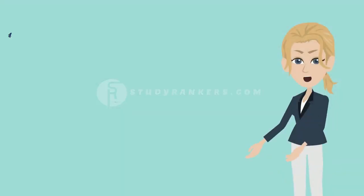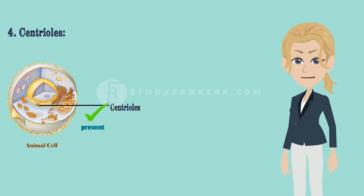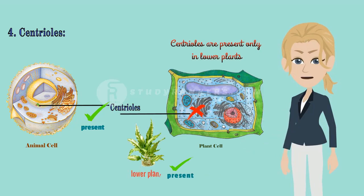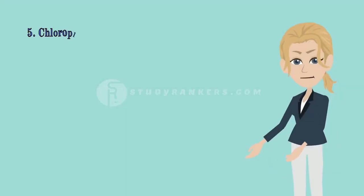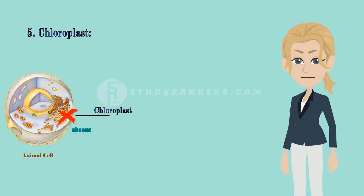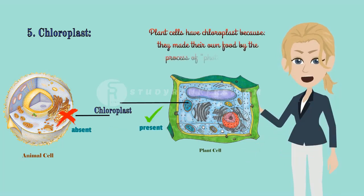Fourth, centrioles. In animal cells, centrioles are present. Whereas, in plant cell, centrioles are present only in lower plants. Fifth, chloroplast. Animal cells do not have chloroplast. Plant cells have chloroplast because they make their own food by the process of photosynthesis.